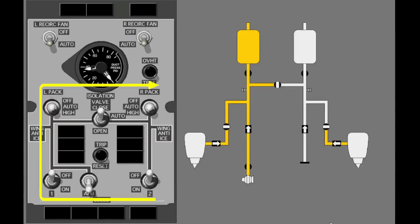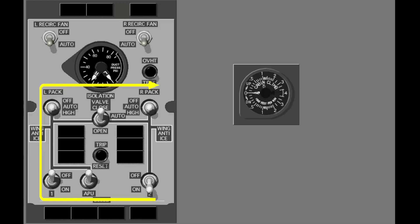After you complete a no-engine bleed takeoff, do the steps in the opposite order to put the bleed air system in the normal configuration for flight. Turn on the number two engine bleed. Turn off the APU bleed. Before you turn on the number one engine bleed, make sure that the cabin rate of climb is stable. This makes sure the APU bleed valve is fully closed before you open the engine bleed valve. Turn on the number one engine bleed.